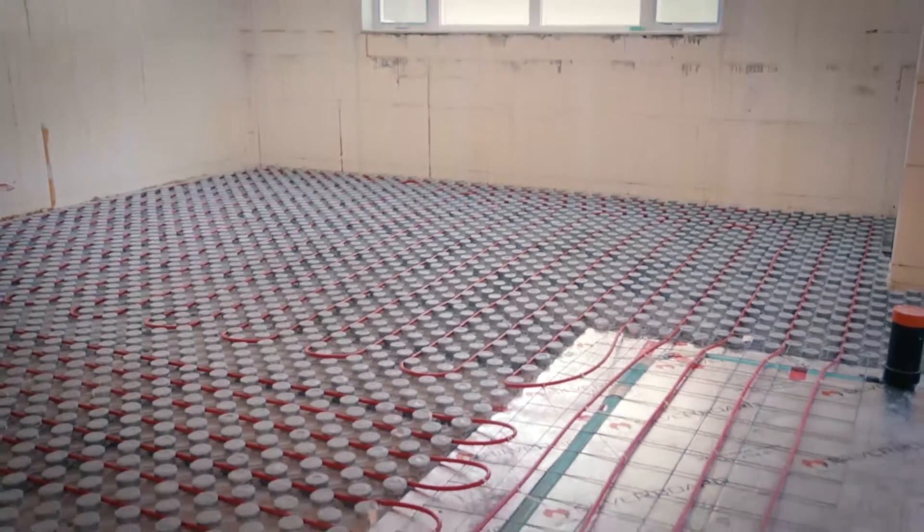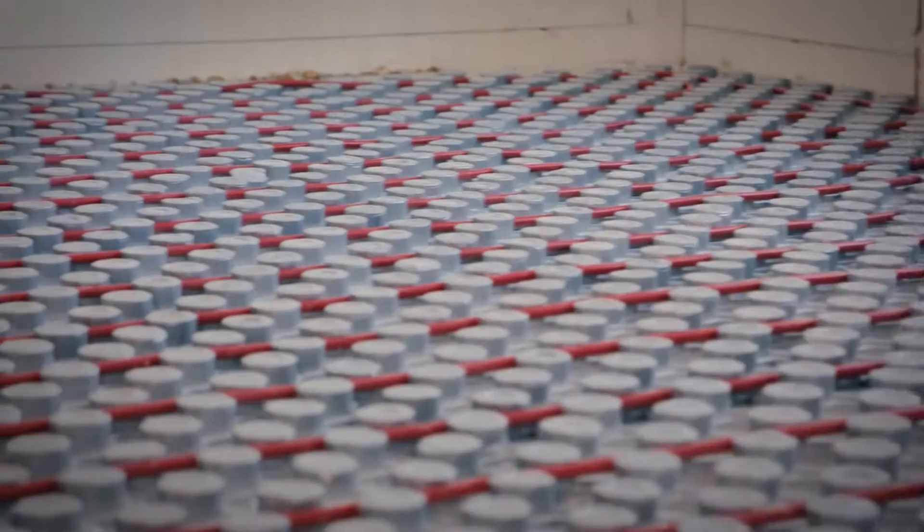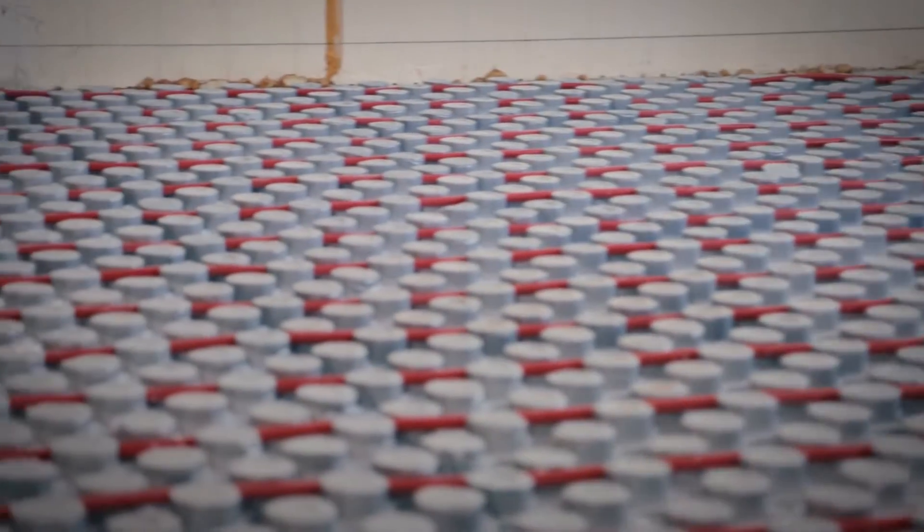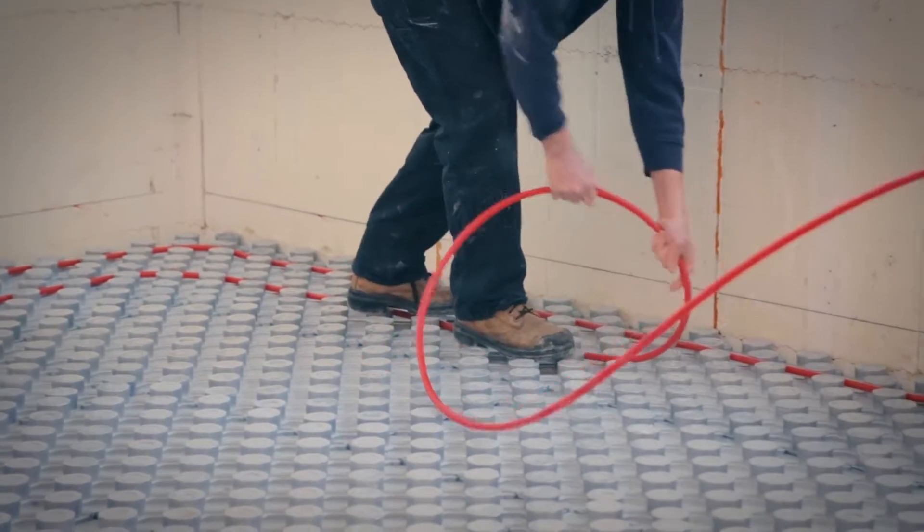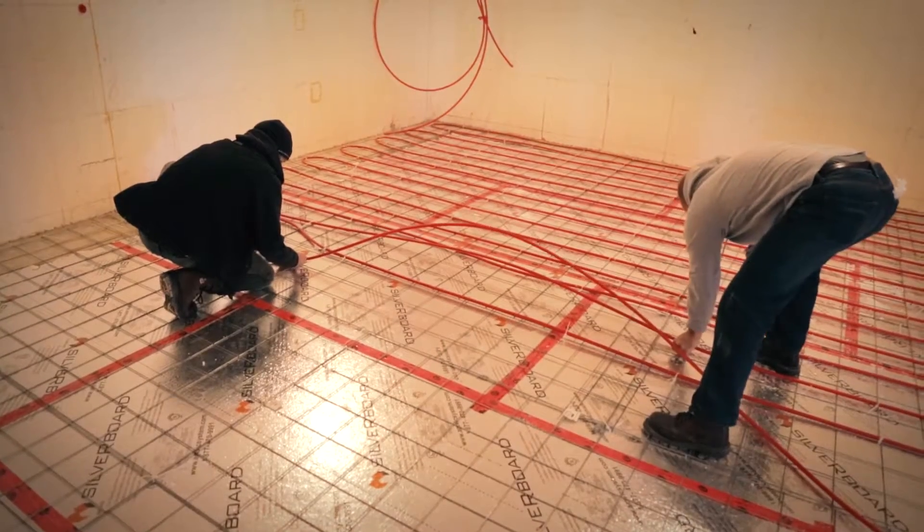The AMVIC Insulated Radiant PEX Panel has been specifically designed to provide the most cost-effective installation and performance characteristics for hydronic radiant floor heating systems.